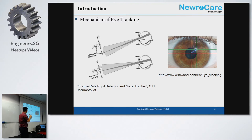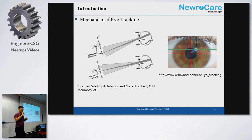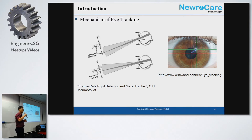We have two methods. One is called dark pupil, one is called bright pupil. The bright pupil method is similar to shooting in a night environment — the so-called red eye effect. The dark pupil method is more popularly used nowadays in eye trackers.